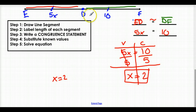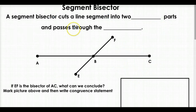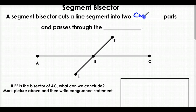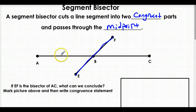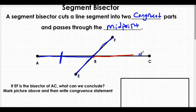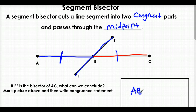Does that make sense? 5 times 2 equals 10, and DF is 10 — they're the same, so we did it. Moving on to segment bisectors: a segment bisector cuts a line segment into two congruent parts and passes through the midpoint. For example, if EF is the bisector of AC, since EF cuts AC into two equal parts, we know AB is congruent to BC — and we write that congruent statement. So if AB was 15, we know BC is also 15.